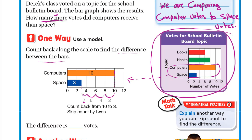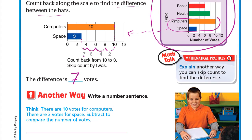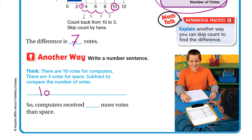The difference is 7 votes. Another way is to subtract: computers are at 10, space is between 2 and 4 which is 3, so 10 minus 3 equals 7. Computers received 7 more votes than space.